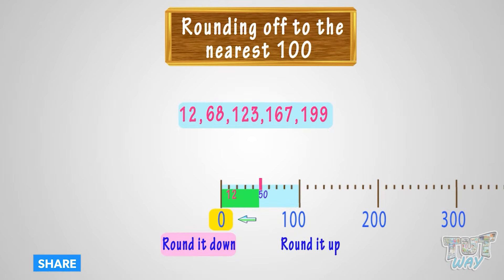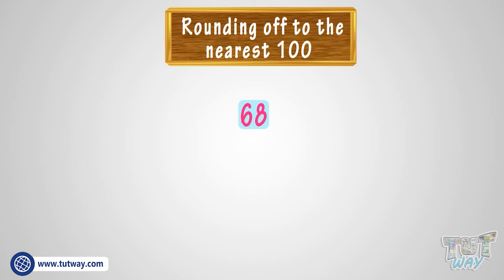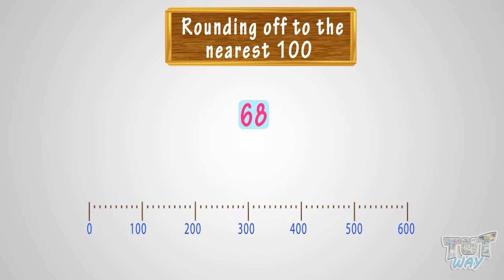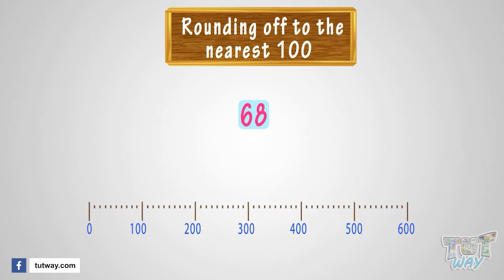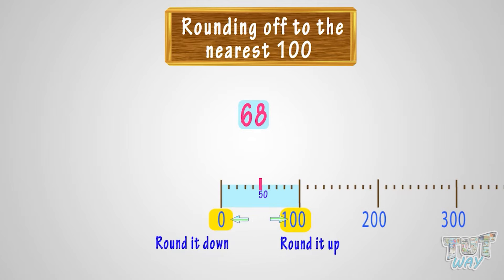Let's take the next number, 68. We have to round 68 to the nearest 100. Let's see where we can fit 68 on this number line. It is somewhere between 0 and 100. So we have two options: either round it down to 0 or round it up to 100.